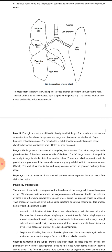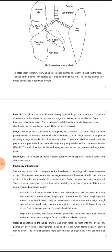The left lung consists of a single lobe while the right lung is divided into four smaller lobes: anterior, middle, posterior, and postcaval lobe. Internally, the lungs are greatly subdivided into numerous air sacs or alveoli.